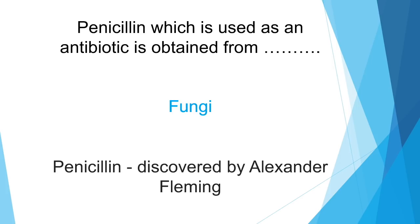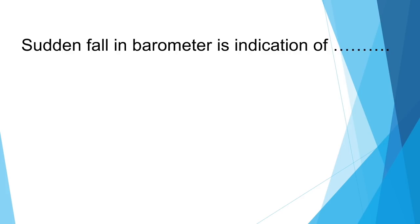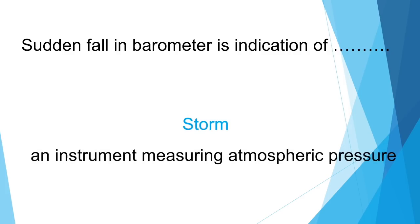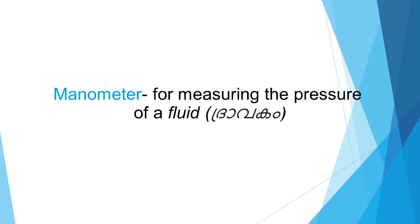A sudden fall in the barometer reading is an indication of a storm. A barometer is used to measure atmospheric pressure. The instrument used to measure the pressure of a fluid is called a manometer.